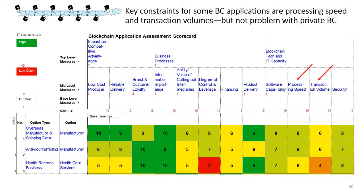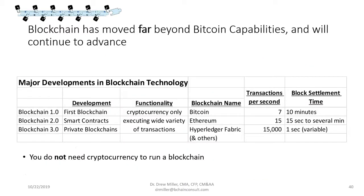It used to be that people thought blockchain was too slow — that's Bitcoin-era thinking. Nowadays that's really not a problem for most business private permissioned blockchains. While Bitcoin only does about 7 transactions per second and a block can take 10 minutes or longer to process, private permissioned blockchains like Hyperledger Fabric can do thousands of transactions per second — hitting credit card speeds. Transactions per second is probably not a constraint for most business applications.